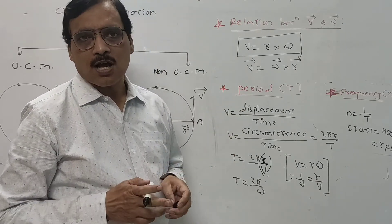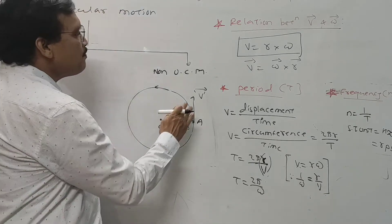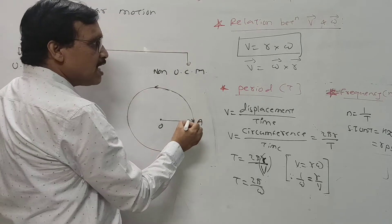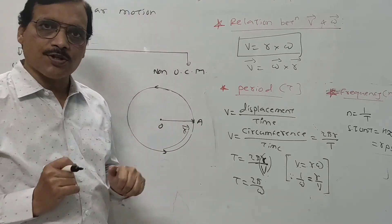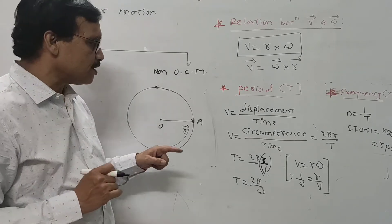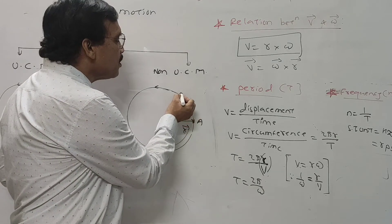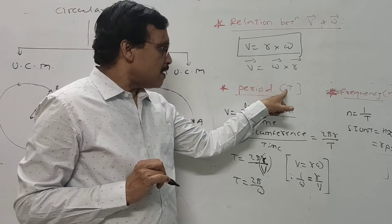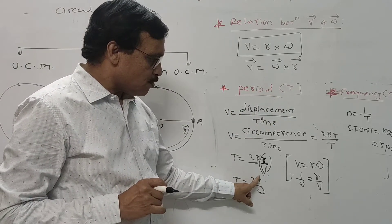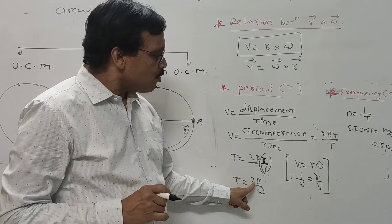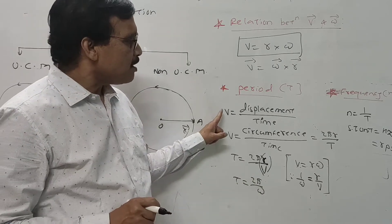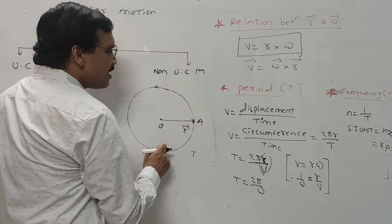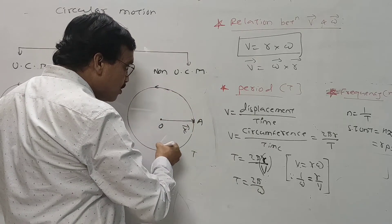The period of circular motion means the time required for the particle to complete one full circle. That is called the period of circular motion. Its formula is T equals 2 pi upon omega.